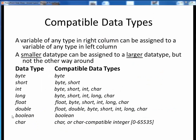Here we can see a list of compatible data types for each of the eight fundamental data types in Java. We can assign a variable or expression of any of the right-side data types to variables of the left-side data types. We can assign a smaller data type to a larger data type, but not a larger to a smaller. For example, an int is 4 bytes, so we can assign to it a 1-byte byte, a 2-byte short, another 4-byte int, or even a char. We can assign to a float any of the integer data types or a char, but not the larger double data type.